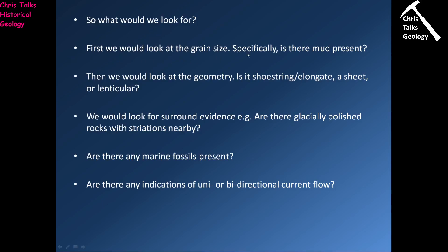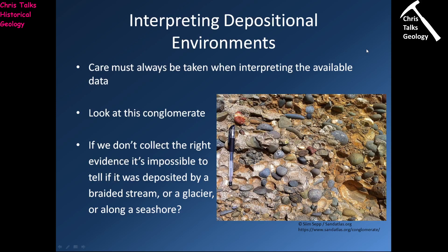First we would look at the grain sizes — specifically, is there any mud present? Looking at this rock, we can see gravel and cobble-sized clasts, and the matrix between them looks quite gritty, suggesting a sandy matrix with relatively little mud — not much silt, not much clay. That would imply a glacial origin is probably less likely, because a glacier produces a very distinctive conglomerate called a till, which is very clay and silt rich. The lack of clay and silt suggests we may be looking at a braided river system sediment or maybe a beach sediment.